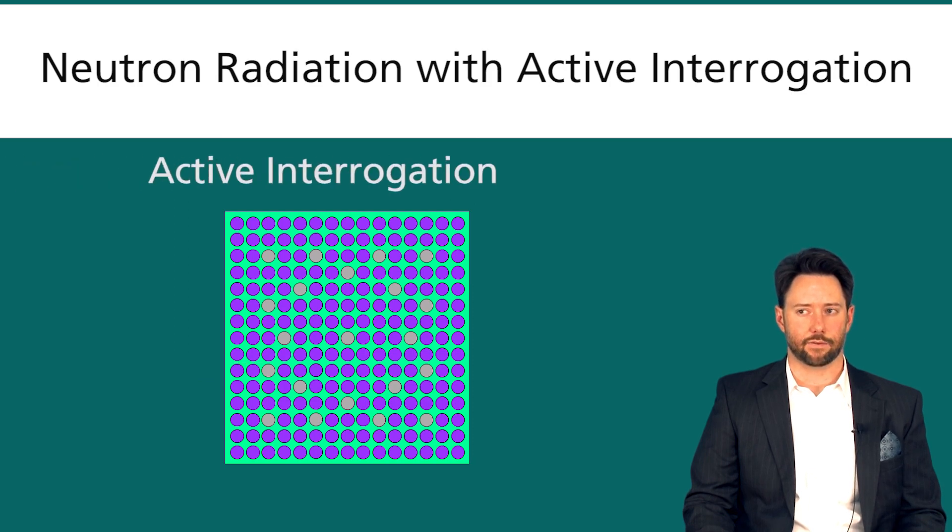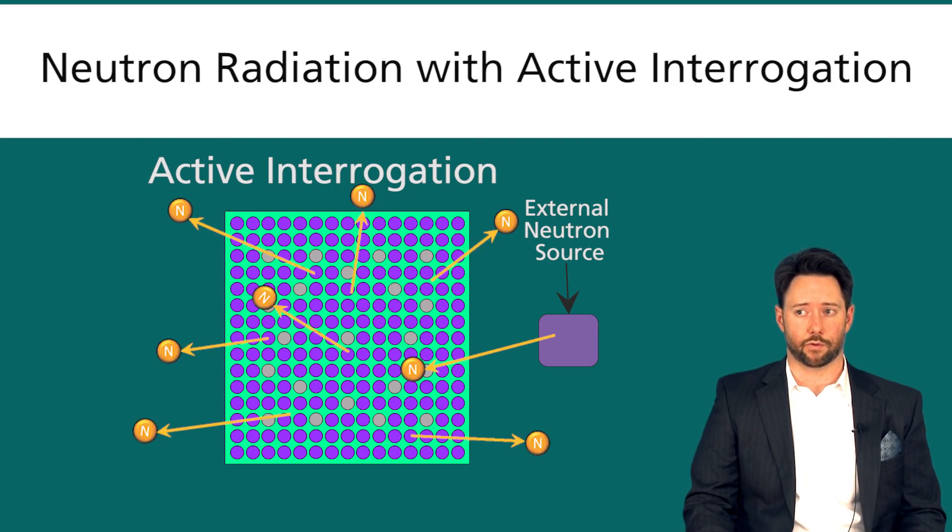With active interrogation, you introduce an external neutron source. That external source basically shoots neutrons into the fuel assembly and you get fissions from the uranium-235 and plutonium-239.